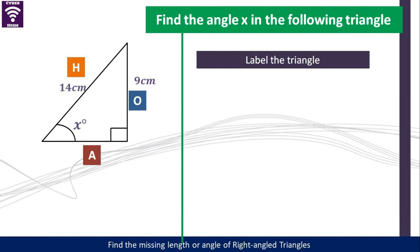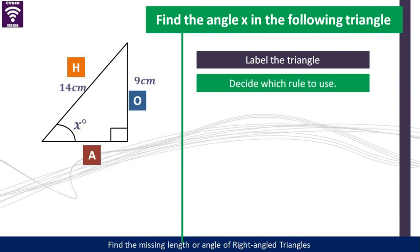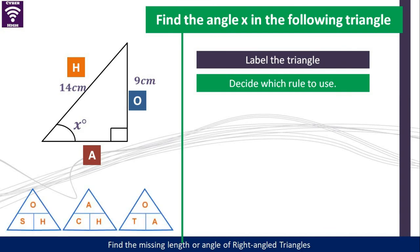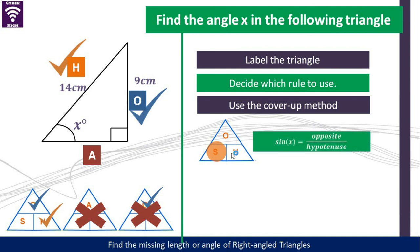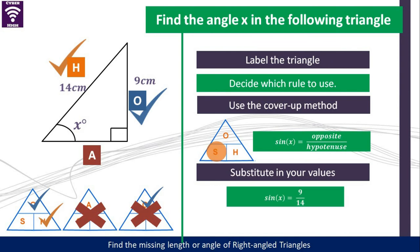Let's have a look at this one. You label your triangle, then decide which rule to use. After deciding, you draw your SOHCAHTOA triangles. We have the opposite side — which means cosine goes off. What else have you been given? The hypotenuse. The combination that has both the opposite and hypotenuse is the sine rule. So we cover S, giving us this relationship: sine of X is equal to the opposite over the hypotenuse. Substitute your values, find the inverse of the sine — press second function, then sine inverse, then open bracket 9 over 14, close bracket. It gives us 40 degrees.